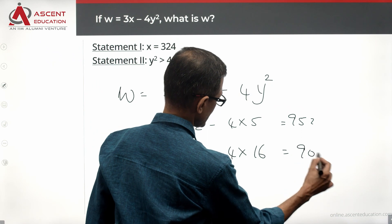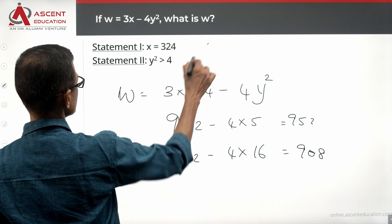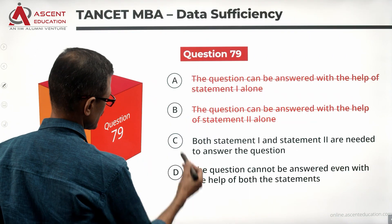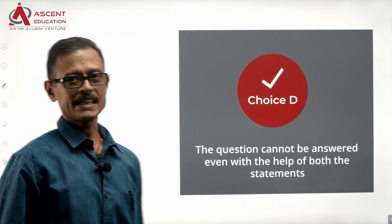give us an answer equal to 908. Infinite possibilities are there. We are not able to get a unique answer combining the two statements. Statements together are not sufficient. Answer choice D is the correct answer to the question.